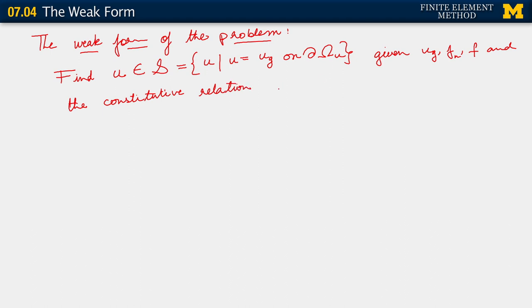Our constitutive relation is j sub i equals minus kappa_ij times u sub j. Given all this, find u such that...